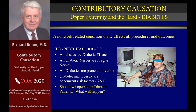Diabetes and obesity can also present as concurrent risk factors. Using the Greek formula for multiple variables — 2 to the power of n, where n is the number of variables (diabetes and obesity) — 2 squared is 4, minus 1 is 3: there are three possibilities. The patient has diabetes, has obesity, or has both diabetes and obesity as concurrent risk factors. That's pretty scary, and so we ask ourselves: could we operate on diabetic patients, rather than simply declaring them permanent and stationary with nothing to be done?